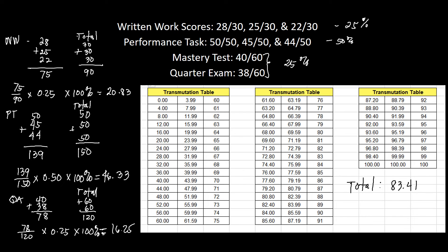This is not yet your final grade — you need to look it up in the transmutation table. We locate 83.41 on the second column of the table. The score 83.41 falls in the range from 82.40 to 83.99, and the equivalent grade for that range is 89. So your final grade is 89 under the 25-50-25 grading system.